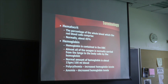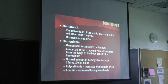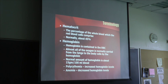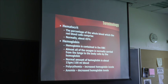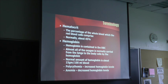Some more terminology. Hematocrit is the percentage of whole blood which the red blood cells comprise. When blood stands still, the red blood cells are heavy and fall to the bottom of a test tube, with a straw-colored fluid on top. The red blood cells are usually about 45% of whole blood, and the rest is plasma.